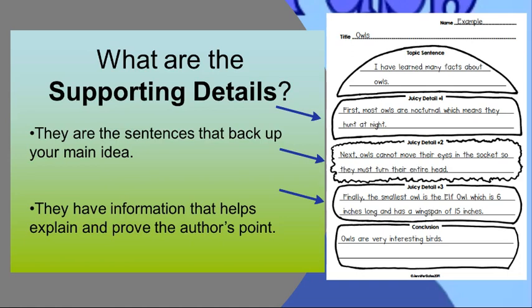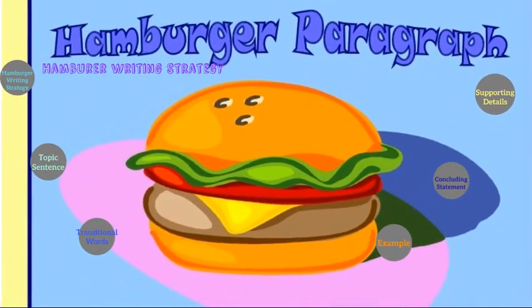So here we backed up our topic sentence. I cannot suddenly speak about peacocks, for example. No, I have to stay on topic, and my supporting details must discuss the topic sentence. Now let us move on to the concluding statement.